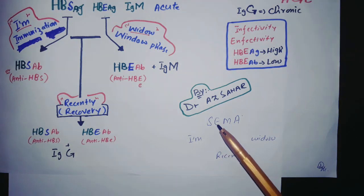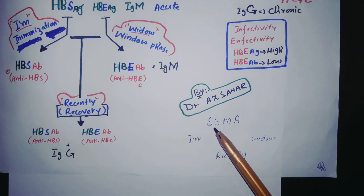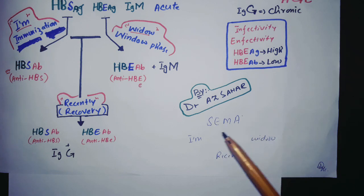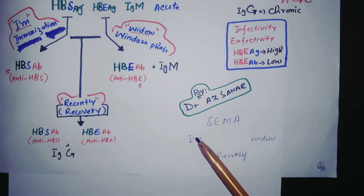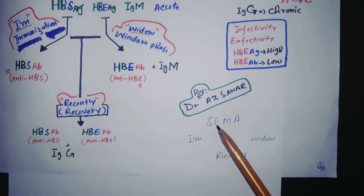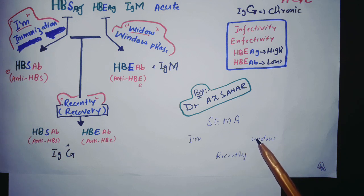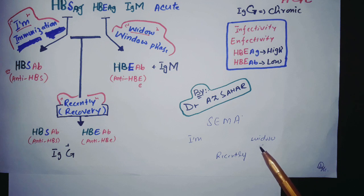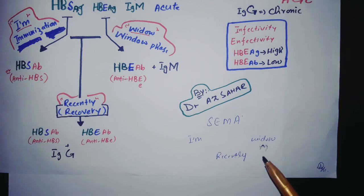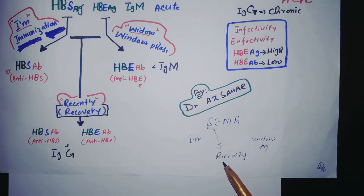To summarize: IgG is seen in chronic infection. Antibodies to S indicate immunization. Antibodies to E indicate the window phase — and inverting the W gives M, so IgM is seen in the window phase. Antibodies against both S and E indicate recovery, and recovery is late so we put IgG.